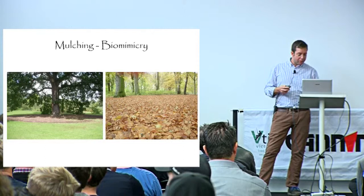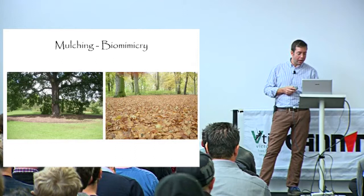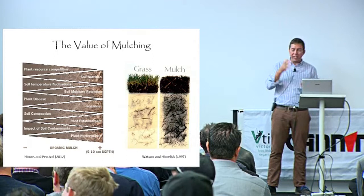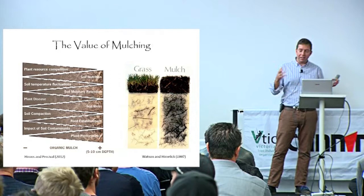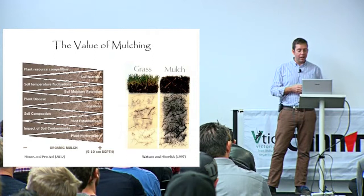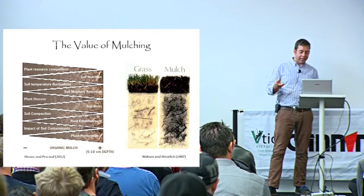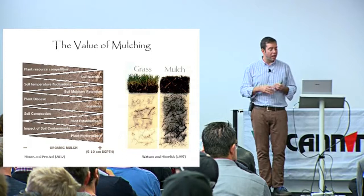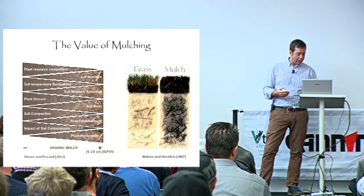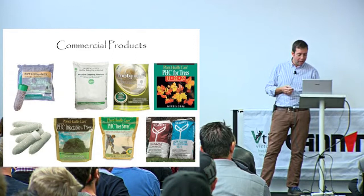I would emphasize biomimicry and trying to emulate the woodland within the urban or parkland situation where possible - and mulch is really key to that. Mulch reduces competition, increases nutrition, slows down temperature fluctuations, improves soil moisture retention, reduces disease, improves biota, reduces compaction, enhances root establishment, reduces the impact of contaminants, and ultimately improves performance. Mulch is a really valuable, easy gain from a plant health care perspective. There are also commercial products from fertilizers to mycorrhizal injections.